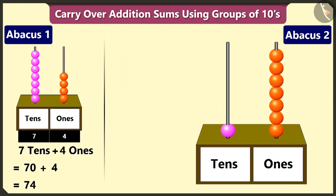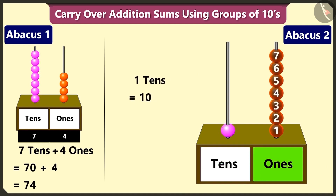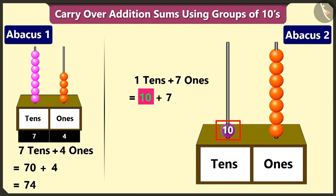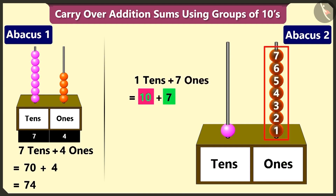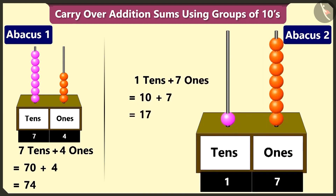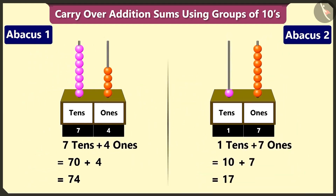And in the second abacus, in the tens box there is 1 bead — that is 1 ten. In the ones box there are 7 beads — 7 ones. So adding 1 ten and 7 makes 17. Now we have to add 74 and 17.